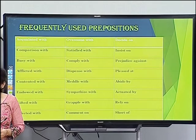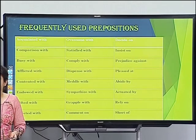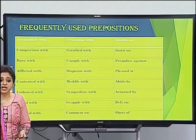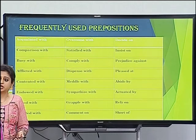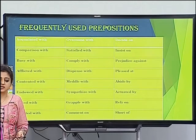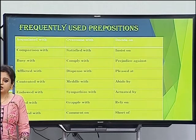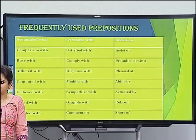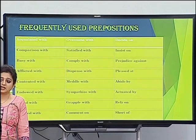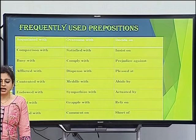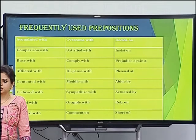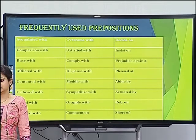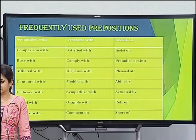'By' is used for an active agent — for human beings as agents. For example, he was killed by Mohan. 'By' is for the active agent, while 'with' is for the tool used.